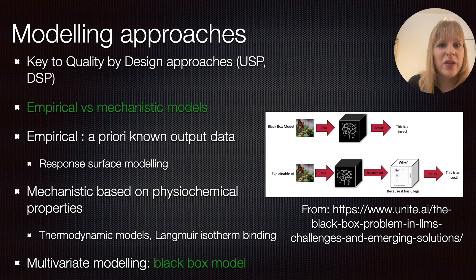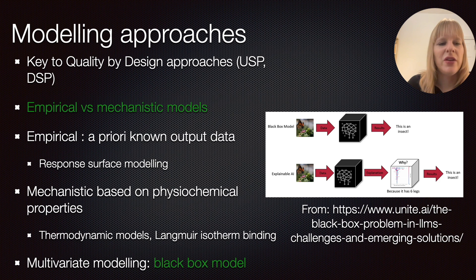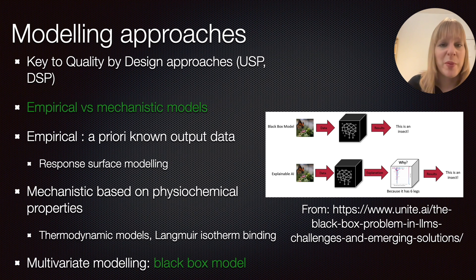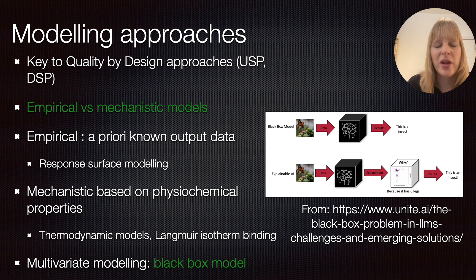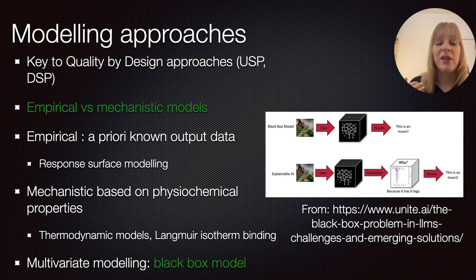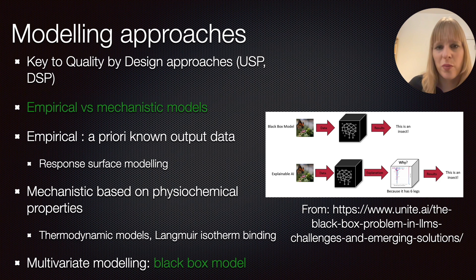The other type doesn't work on existing data sets but on knowledge available to you, calibrated based on physicochemical properties — for instance, a standard thermodynamic model or the Langmuir isotherm binding. You look at theory available for your particular system in order to build your model, and the advantage is that it gives you a deeper understanding of the processes rather than an empirical model.